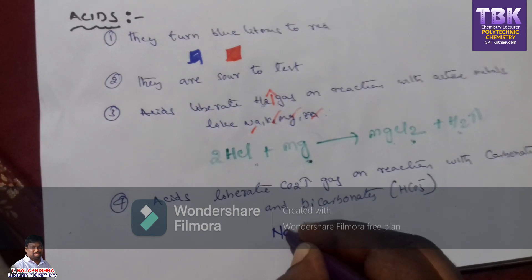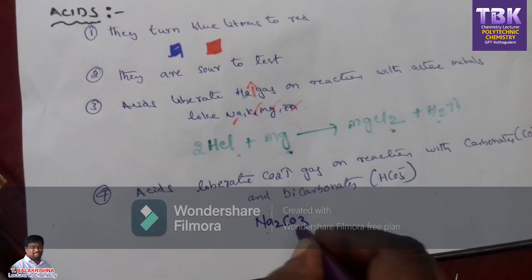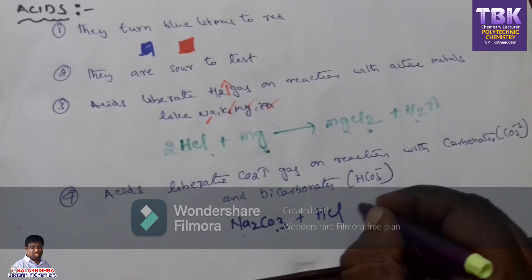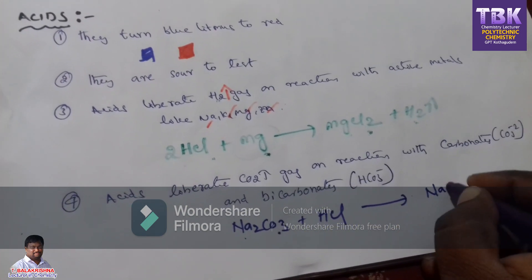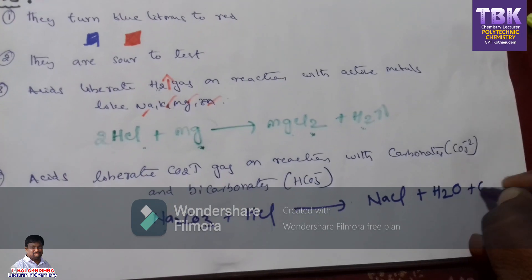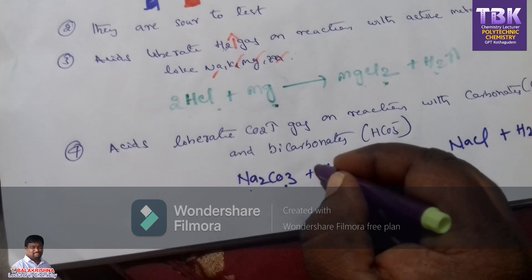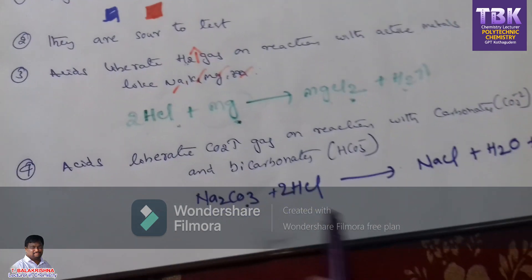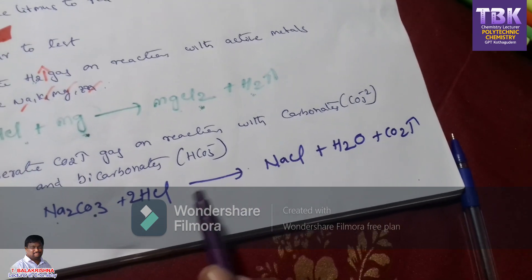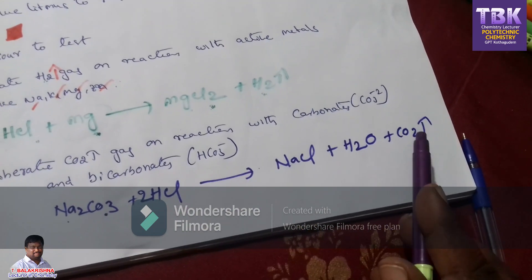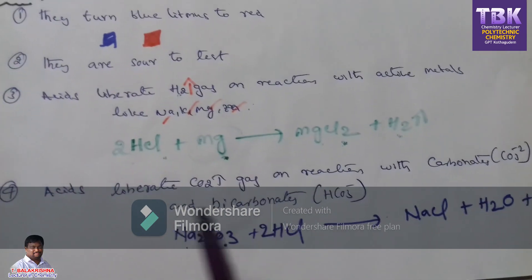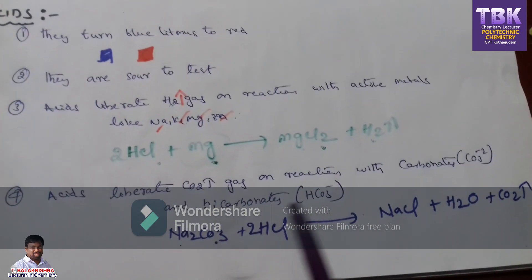For example, take sodium carbonate Na₂CO₃. If it is reacted with acid HCl, it produces NaCl salt plus water plus CO₂ gas. When you balance the equation, it is 2 moles. If acid reacts with carbonates and bicarbonates, it produces CO₂ gas. The substance that produces CO₂ gas when reacting with carbonates is called an acid. Acids liberate CO₂ gas on reaction with carbonates and bicarbonates.